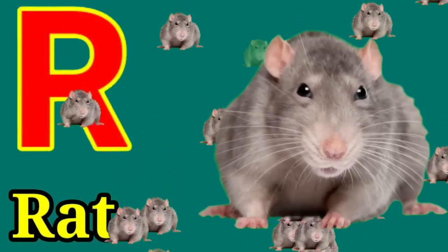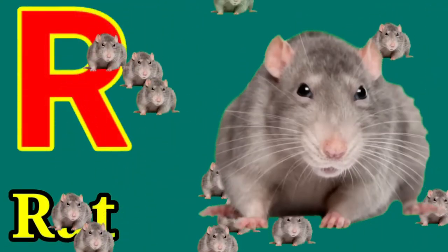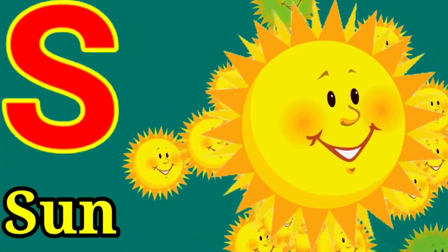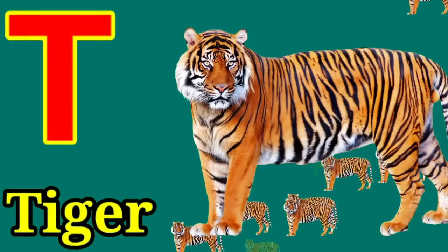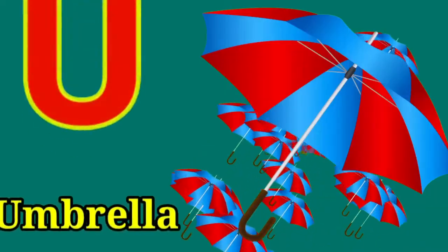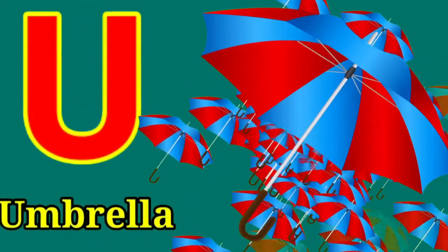R for rat, S for sun, T for tiger, U for umbrella.